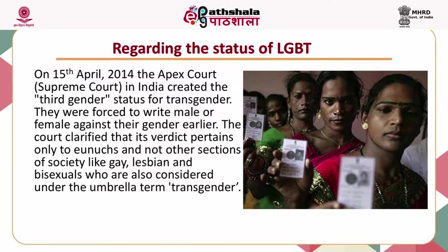The court clarified that its verdict pertains only to eunuchs and not to other sections of society like gays, lesbians, and bisexuals who were also considered under the umbrella term transgenders. With this landmark decision, India became the first country to recognize transgenders as a third gender. The Supreme Court also added that third gender people would be considered as OBCs and given educational and employment reservations accordingly.